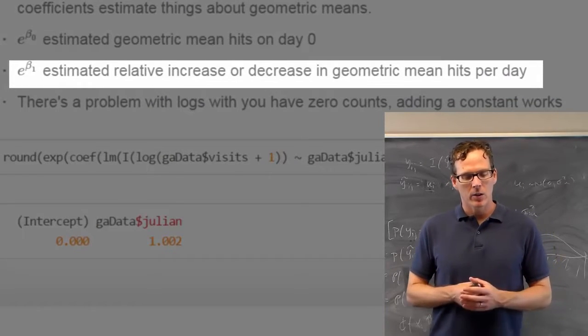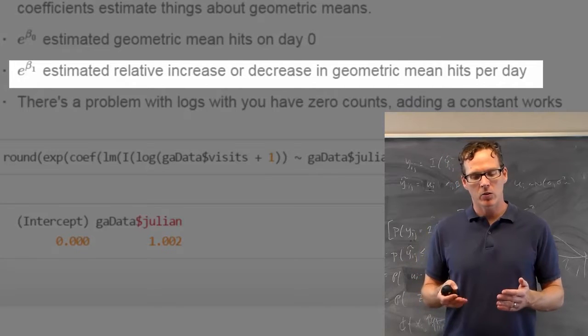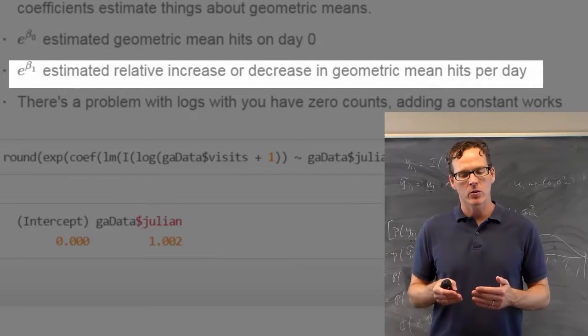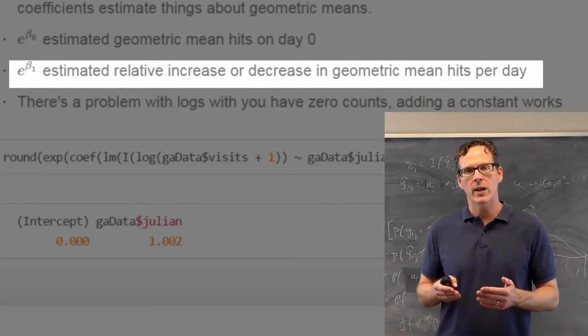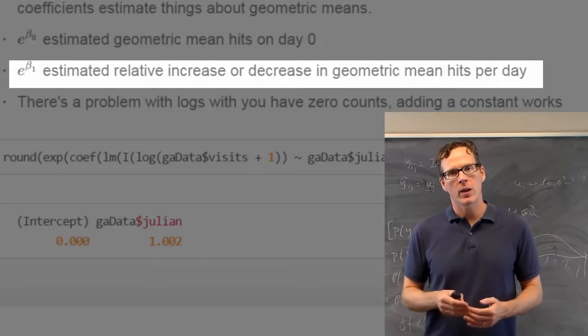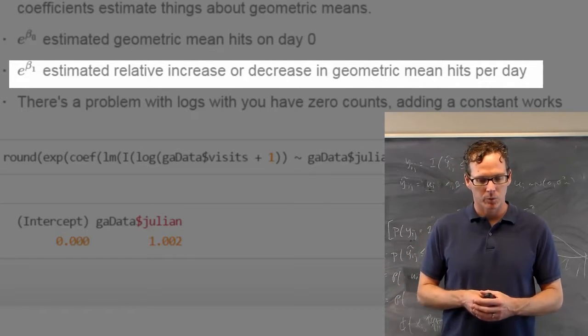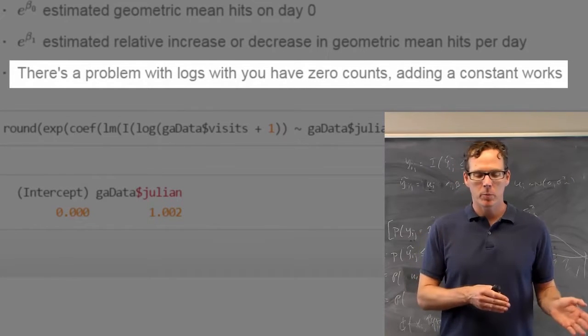E to the beta_1, on the other hand, is the estimated relative increase or decrease in the geometric mean hits per day. The increase per day. So I should also mention, there's a problem with logs.